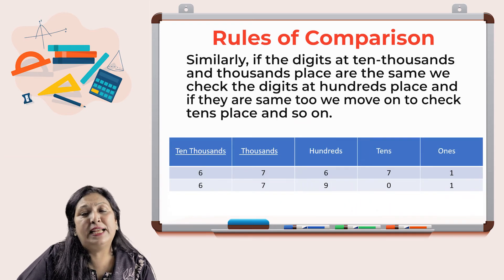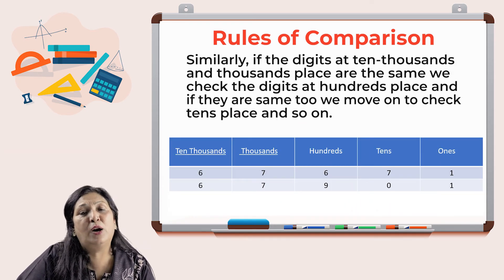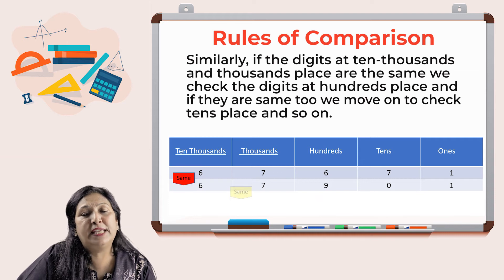Similarly, if the digits at ten thousands place and thousands place both are same, then we check the digits at hundreds place. And if they are same too, then we move on and check the tens place and so on.